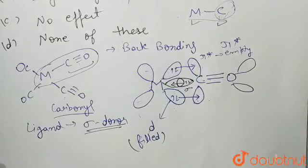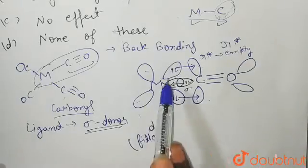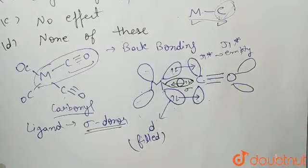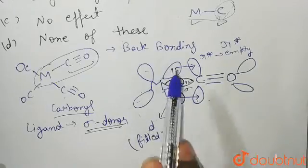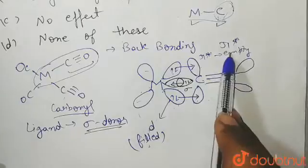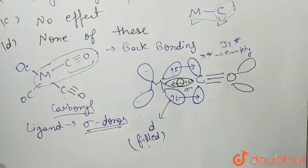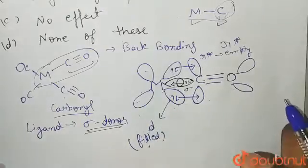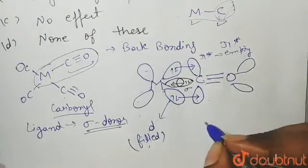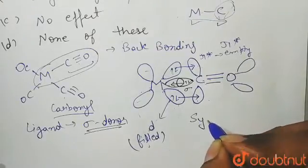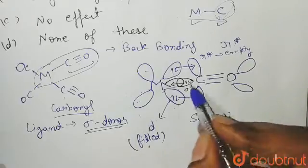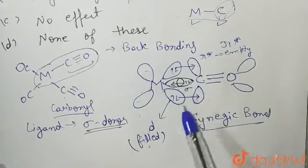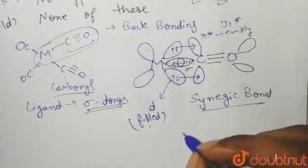This is known as synergic bonding, which is a kind of back bonding. To form a sigma bond, the carbonyl was giving electrons to the metal's empty p or d orbital. Simultaneously, the metal is giving its electrons from filled d orbitals to the carbonyl's empty pi star orbital. This kind of bonding — where carbonyl is both giving and accepting into its pi star orbital — is known as synergistic or synergic bonding.